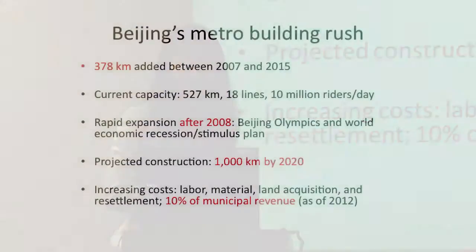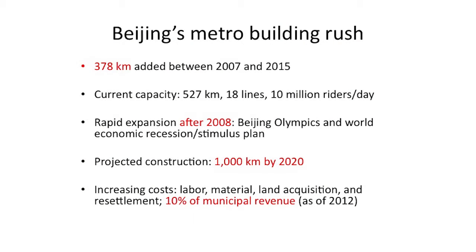Here are some numbers. Between 2007 and 2015 the city added almost 378 kilometers — and these are not light rail, this is subway, underground. The current length of Beijing's metro is more than 500 kilometers, the city has 18 lines, and the daily ridership is more than 10 million passengers. The city has also announced plans to build a thousand kilometers of subway lines by 2020.